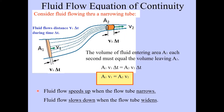This tells us that the fluid speeds up when the flow tube narrows. If A2 is made smaller than A1, then V2 must be greater than V1 because the two products A1V1 and A2V2 have to be equal. Conversely, the fluid flow must slow down when the flow tube widens.